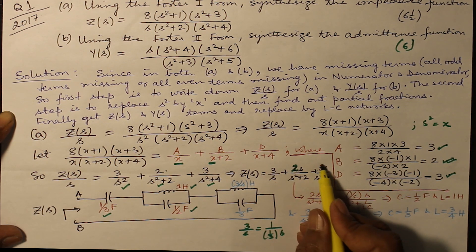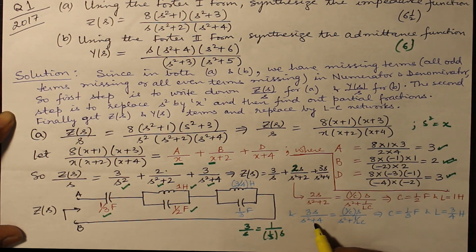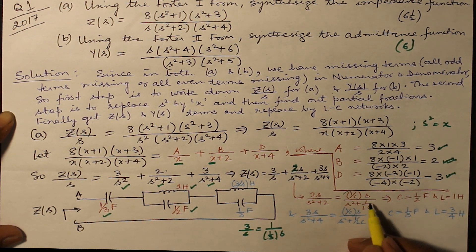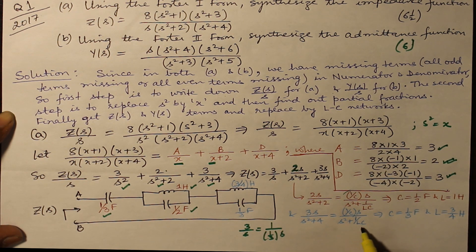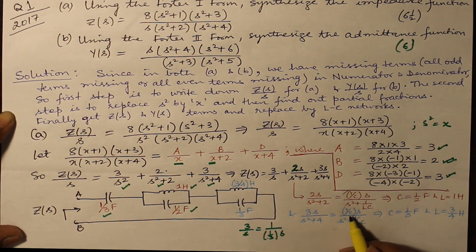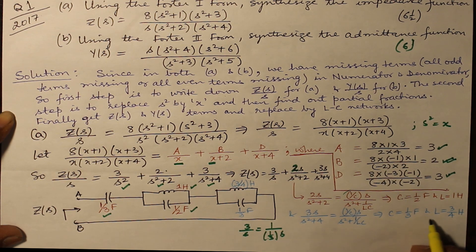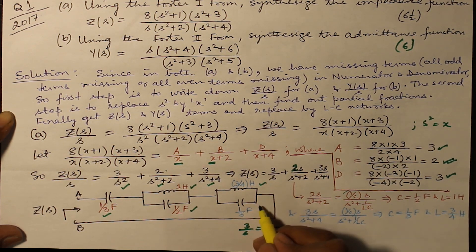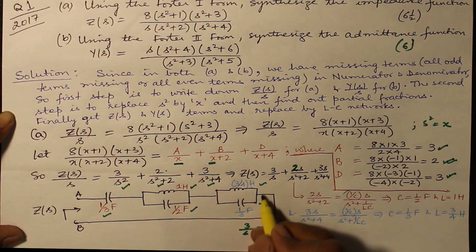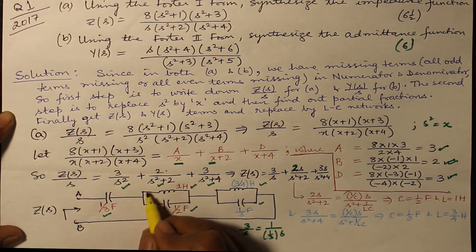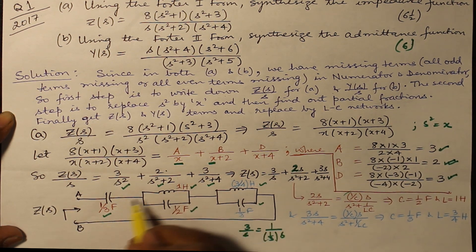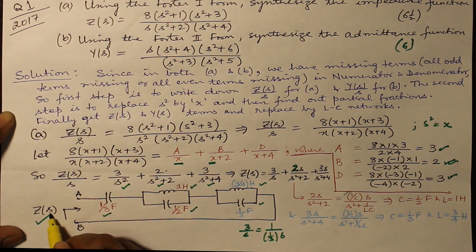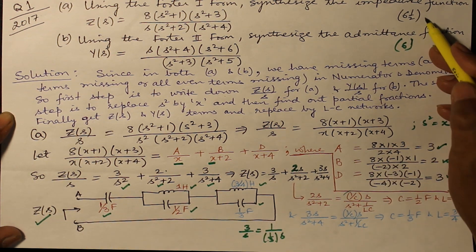Now coming on to the last one, 3s/(s²+4). That is also equal to 1/(Cs) divided by s² + 1/(LC). So that gives you C directly as 1/3 farad and L as equal to 3/4 henry. Both of them are in parallel. And the parallel combination of this LC network, the parallel combination of this LC network, along with the capacitance, gives you the value of Z(s). And you have got 6.5 marks.